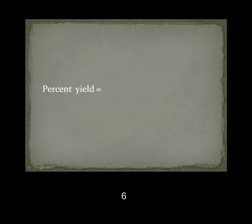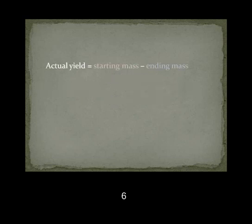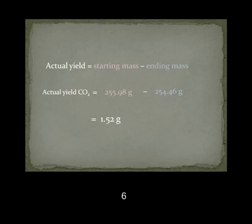The percent yield equals the actual yield divided by the theoretical yield times 100%. Actual yield equals starting mass minus ending mass. The actual yield for carbon dioxide in this experiment is 255.98 minus 254.46, which equals 1.52 grams. This means that 1.52 grams of carbon dioxide is released into the atmosphere when the mixture is swirled.